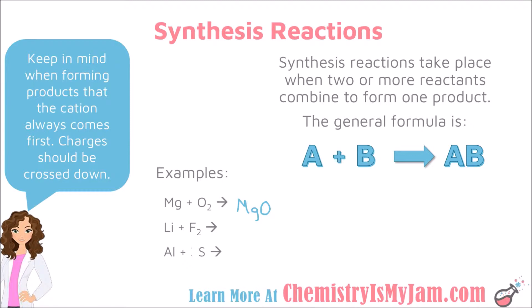Anytime you create a compound when you're predicting products, you should be aware that you need to cross down your charges. So you want to check the periodic table. You'll find that the charge of magnesium is plus 2 and the charge of oxygen is minus 2. Those don't need to be crossed down because they balance out. So we have correctly predicted that the product is magnesium oxide. The last thing that you should do is balance the equation. I have two oxygens on the left and only one on the right, so I'm going to put a 2 here.